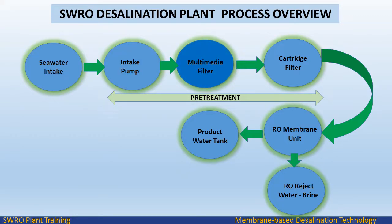Dual-media filtration: For removal of inorganic and organic particles and colloidal matter by inline coagulation, a filtration plant with dual media filters is provided. Injection points for acid and coagulant are located upstream of the filtration plant. The filters are designed as horizontal, single-chamber pressure filters with two layers of filter material and a nozzle floor as an under-drain system. A collector channel is installed over the whole length of the filter.